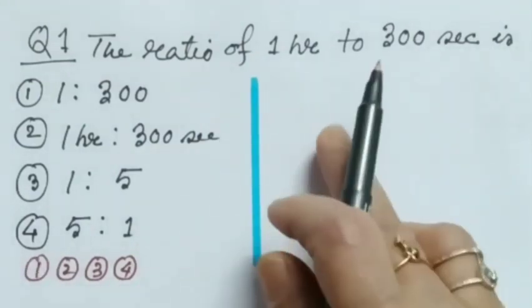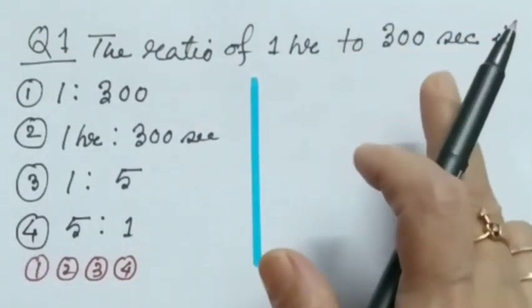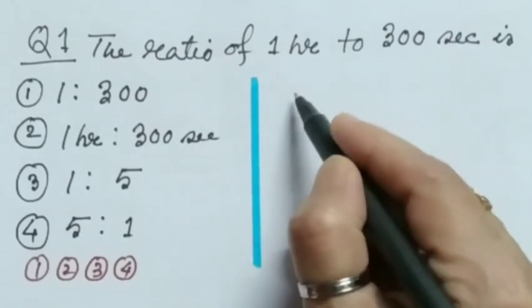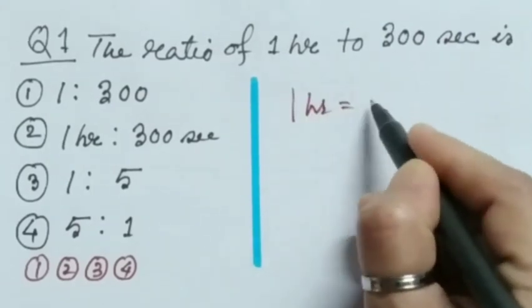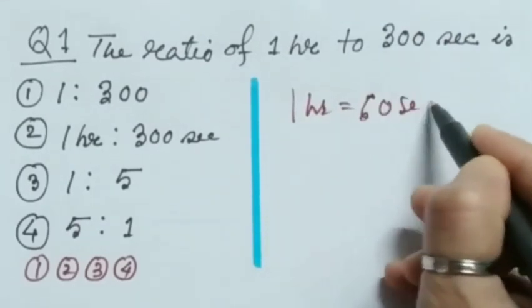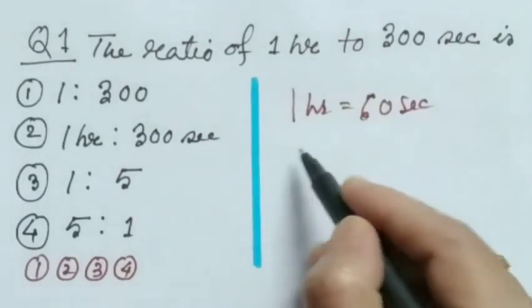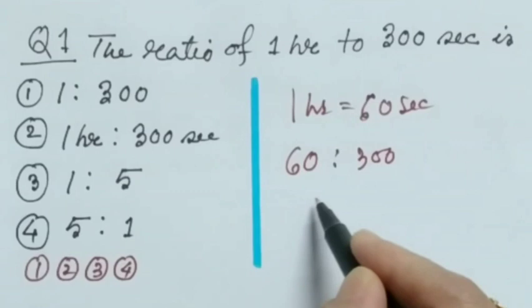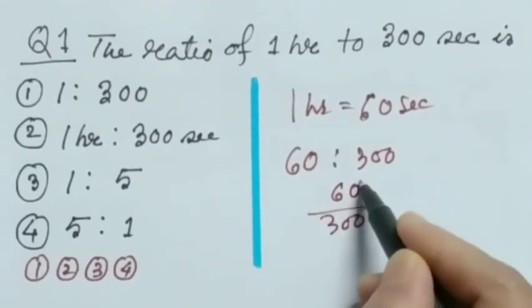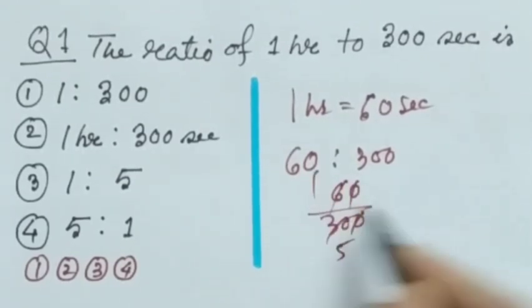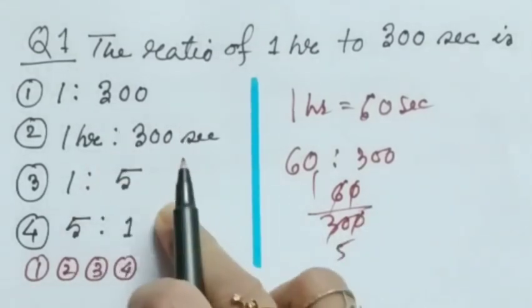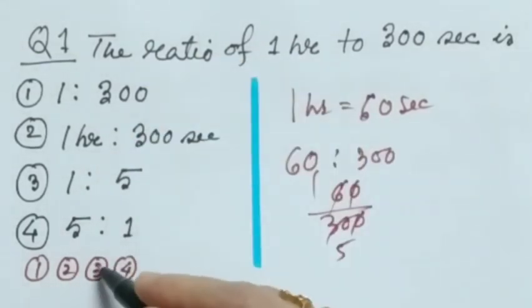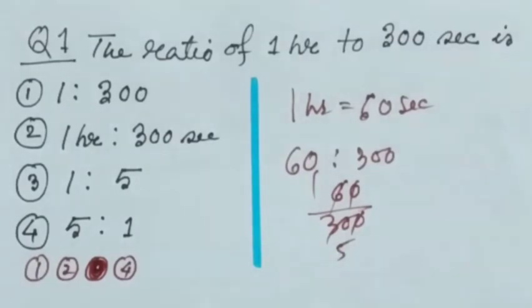ratio does not contain any unit. So now we will convert hour to second. Converting 1 hour is equal to 60 seconds. So our ratio will be 60 is to 300. That is 60 divided by 300. That means 1 is to 5. That means 3 is the correct option. So we will bubble this 3.